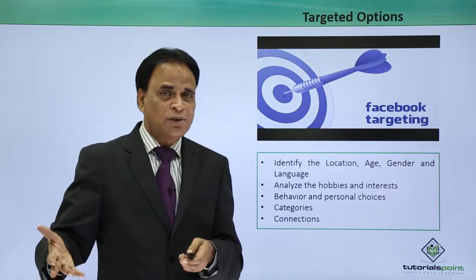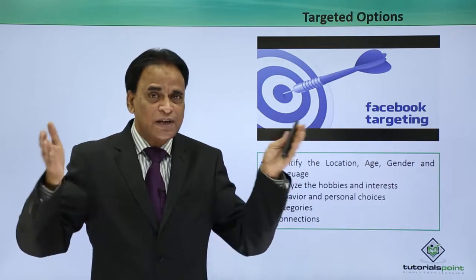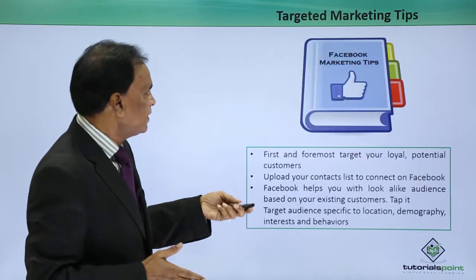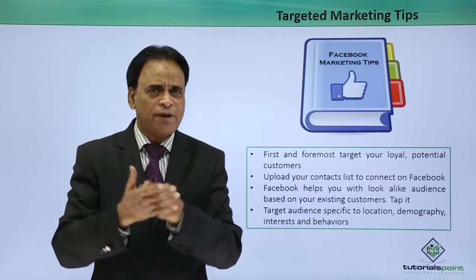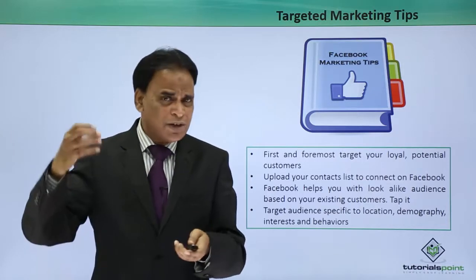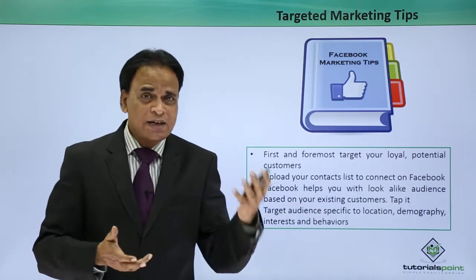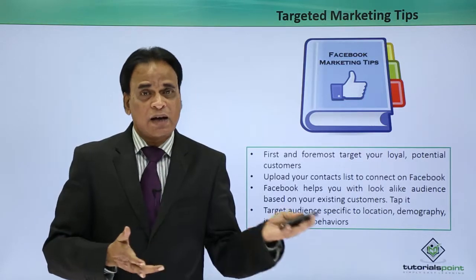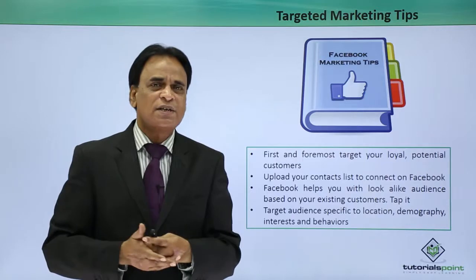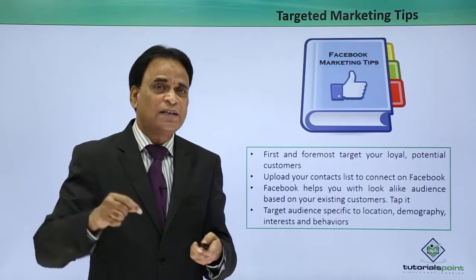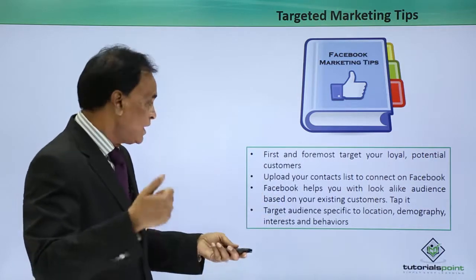Categories and connection — what categories are they in and who are they connected with? These are additional factors to consider when narrowing down to the targeted audience. For targeted marketing tips on Facebook: first and foremost, target your loyal and potential customers. You have created a fan page and you are inviting people. Instead of inviting unknown people first, get the contacts from your existing customers. Let your existing loyal customers connect with you on Facebook, like your page, become a fan, and engage with them. Upload your contact list on Facebook and get them connected.